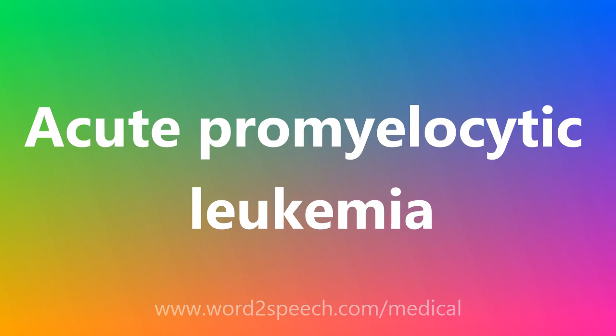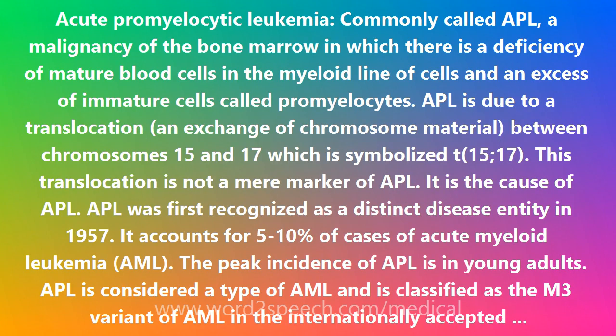Acute Promyelocytic Leukemia, commonly called APL, is a malignancy of the bone marrow in which there is a deficiency of mature blood cells in the myeloid line of cells and an excess of immature cells called promyelocytes.